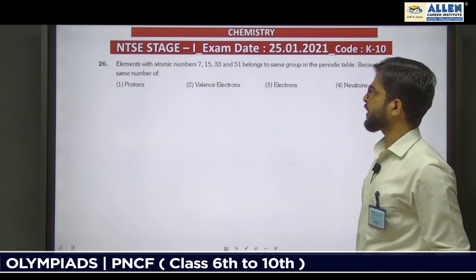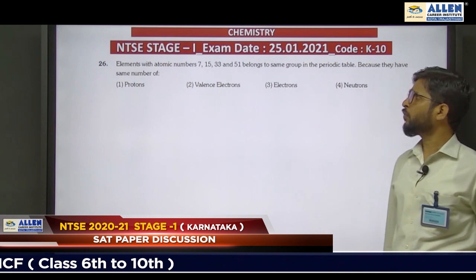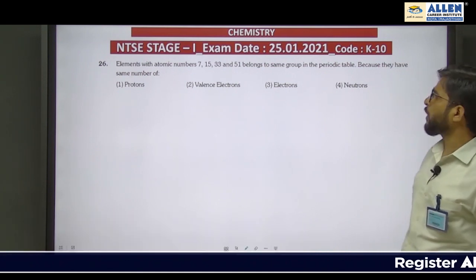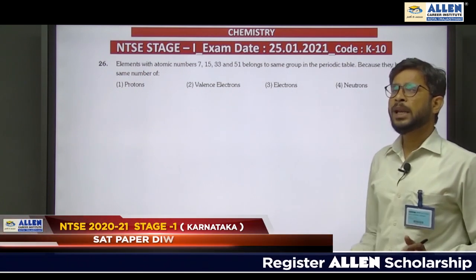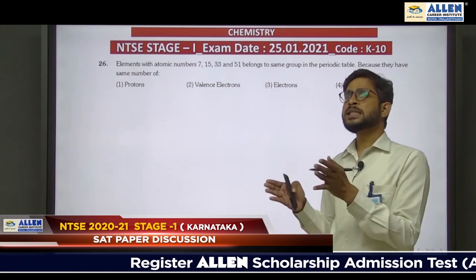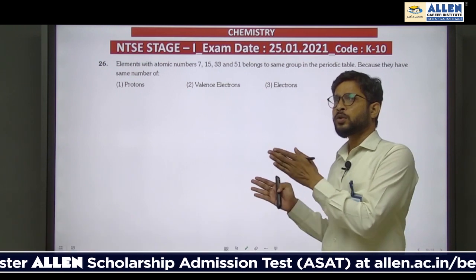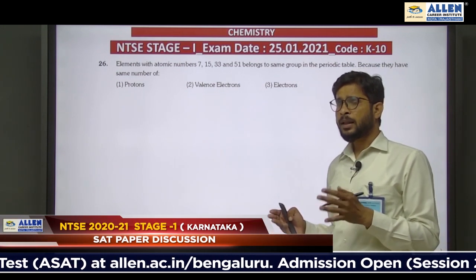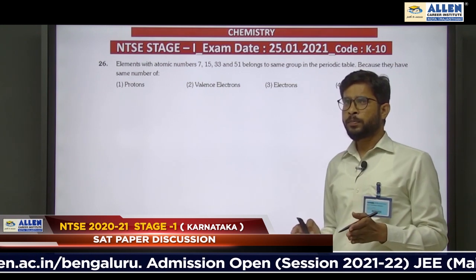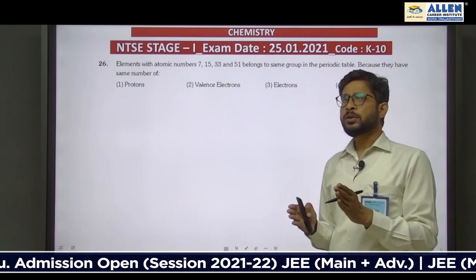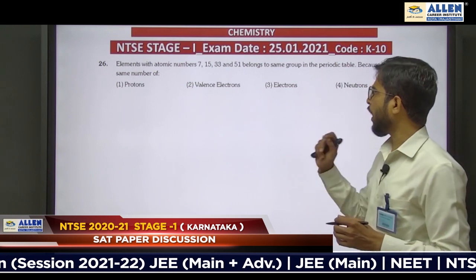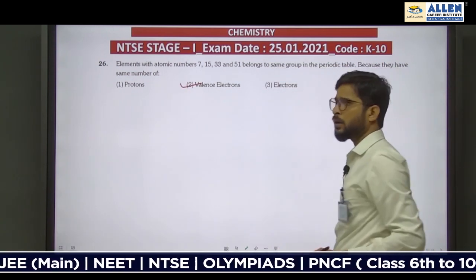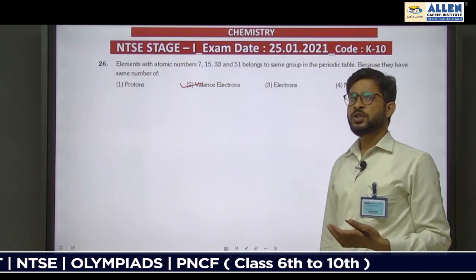Question 26: Elements with atomic numbers 7, 15, 33, and 51 belong to the same group in the periodic table. Elements belonging to the same group have the same number of electrons in their outermost orbit, which are the valence electrons. So according to this, these elements belong to the same group because they have the same number of valence electrons. Option 2 is correct. This concludes the chemistry paper discussion.